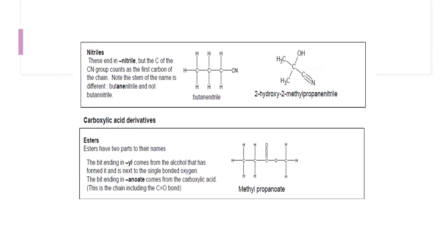The nitrile group is a carbon triple-bonded to nitrogen (C≡N). When naming nitriles, the carbon of the C≡N group is included in the carbon count. With four carbon atoms total and a single bond in the chain, it is butanenitrile. We write the full 'ane' because 'nitrile' does not start with a vowel.